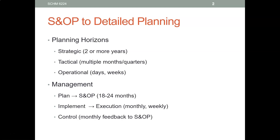When we talk about sales and operations planning, typically S&OP looks into maybe 18 to 24 months into the future — a little over a year. Once you have a sales and operations plan where you balance supply and demand, you need to get to operational plans. A sales and operations plan gives you what needs to happen on a monthly basis.